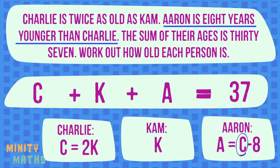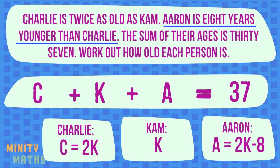For Aaron's age, we can substitute the variable C with 2K, as we know that C equals 2K. You may find there is more than one way to express their ages with algebra — just make sure you write these in terms of only one age, in this case the variable K. Now let's substitute these new expressions into our original equation.